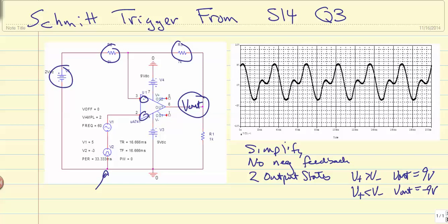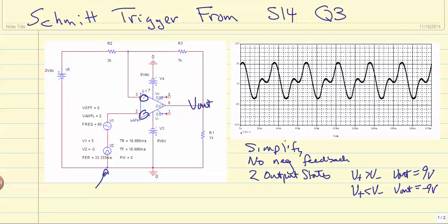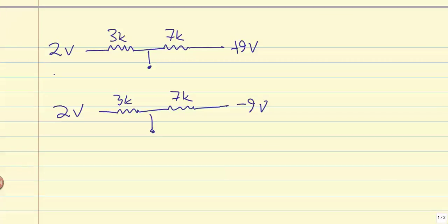What we want to do is I'll just redraw this really quickly, and we'll be able to see how to do this quite simply. Looking at basically just the top part of the circuit, we have two volts, the two resistors, and either nine volts or minus nine volts. The question is, what is the voltage here and here?